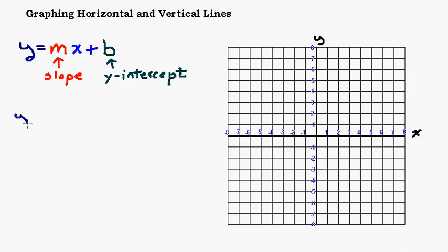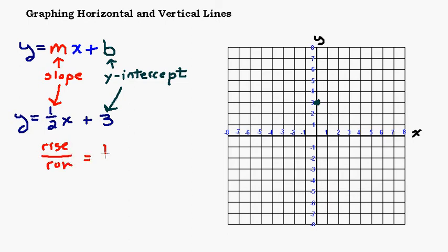Just for a quick review, let's say we've got the line y equals one half x plus 3. To graph this, the first thing you're going to do is determine your y-intercept, which is 3, and plot that on your y-axis. Then figure out your slope, which is the number multiplied by x, so that's one half — rise over run is 1 over 2. So you're going to rise 1, run 2 from the y-intercept, making dots as you go.